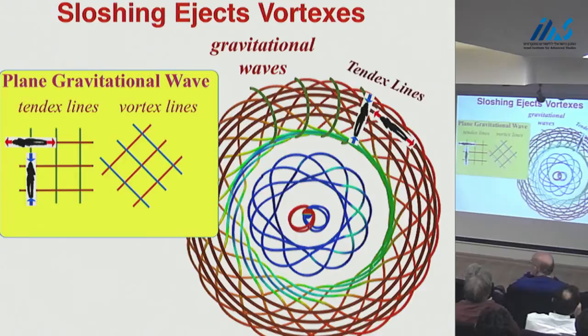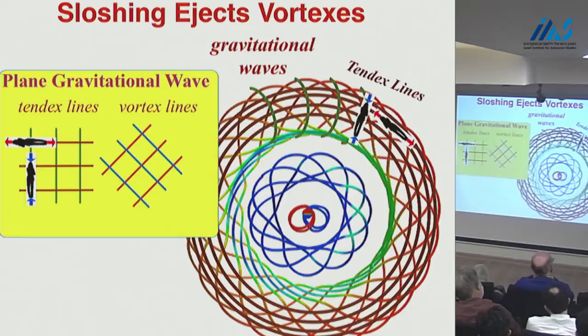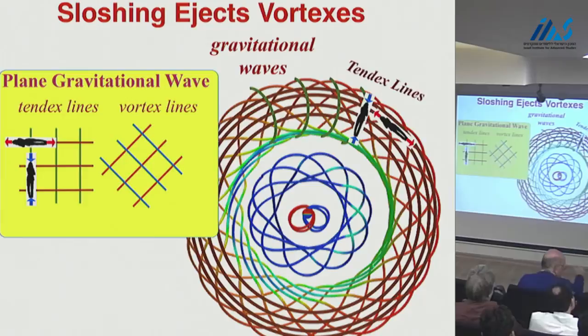The oscillations die out because the waves are carrying away energy. For spinning black holes that collide and merge, up to about 10% of the mass is radiated as gravitational waves. For non-spinning black holes, it's less — around 2% or 3%.